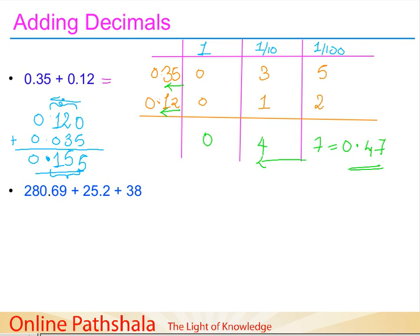You can verify this by counting: from right, the columns are hundredths, tenths, and thousandths — three columns after the decimal. The rule is: find the maximum number of columns after the decimal among all the numbers being added, and place the decimal point that many places from the right in the answer. Here there are three columns, representing thousandths, so we place the decimal after three digits from the right.